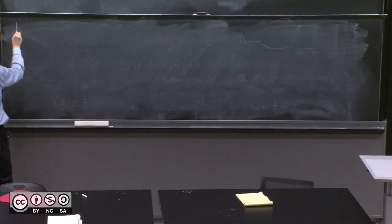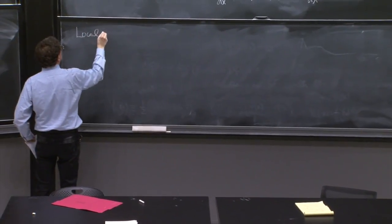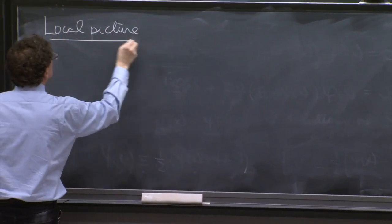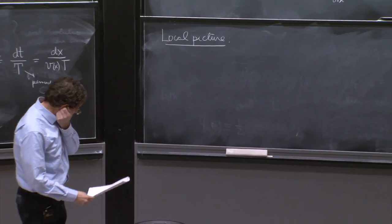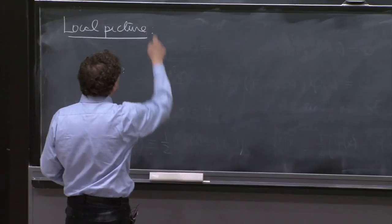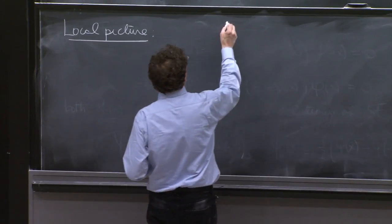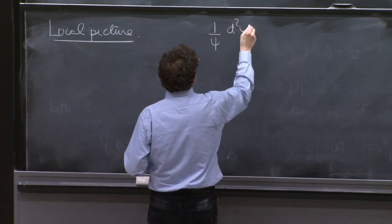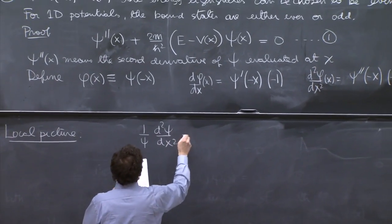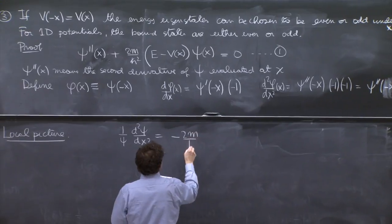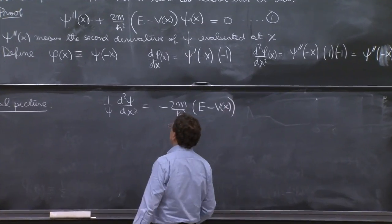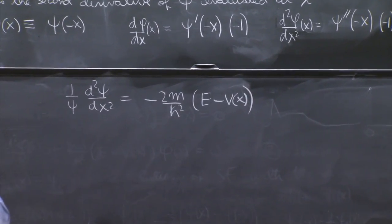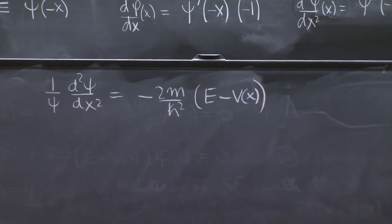So local picture. It's all about getting insight into how the wave function looks — that's what we need. From this equation, you have 1 over psi, d squared psi dx squared, is minus 2m over h-squared times (E minus V of x). Look how I wrote it — I put the psi back here, and that's useful.